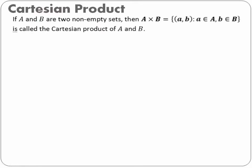The next topic is Cartesian product. If A and B are two non-empty sets, then A cross B — read as 'A cross B' — is a set in which we have only ordered pairs as the elements, where the first element comes from set A and the second element comes from set B. This set is the Cartesian product of A and B.